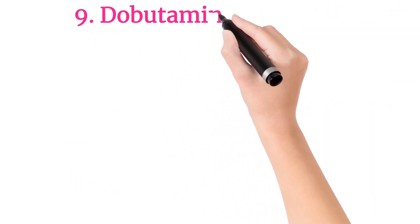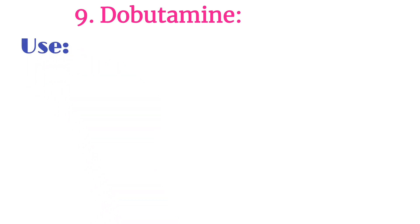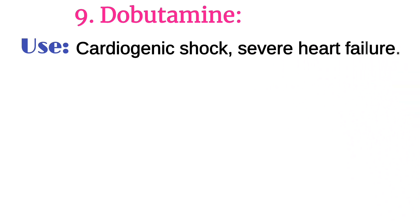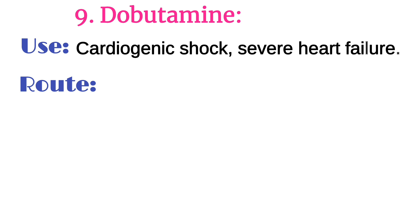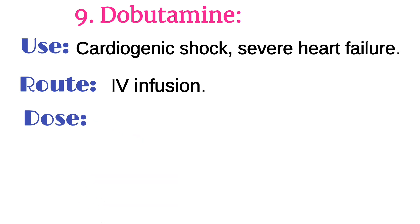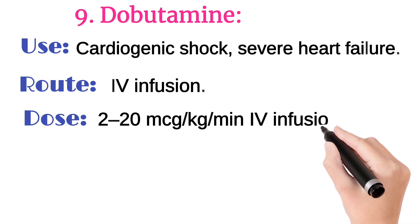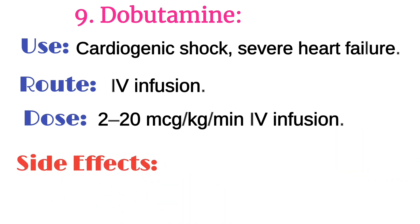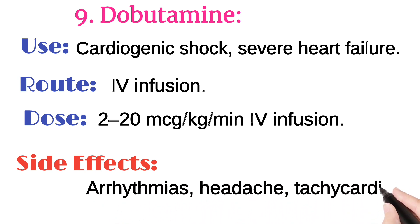Number 9 is dobutamine. It is used in cardiogenic shock and severe heart failure. It is injected intravenously as an infusion. Its dose is 2 to 20 mcg/kg per minute IV infusion. It can cause arrhythmias, headache, and tachycardia.